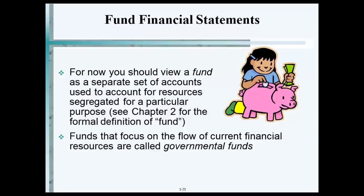Where it says 'flow of current financial resources' — that's a fancy word for cash. Current financial resources are cash. And that's what the basis of accounting is. It's almost like a cash basis, but we don't call it cash basis — we call it modified accrual basis.